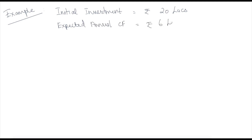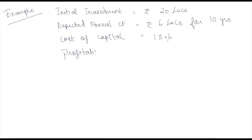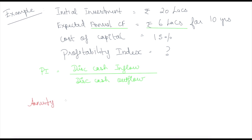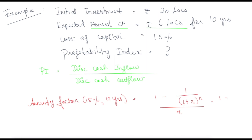Let us move on to the next example. Initial investment is rupees 20 lakhs, expected annual cash flow is rupees 6 lakhs for 10 years, and cost of capital is 15 percent. Find the profitability index. We know the formula: PI equals discounted cash inflow divided by discounted cash outflow. For discounted cash inflow, we need to use the annuity discount factor. Whenever there is a uniform cash flow for n number of years and you want to discount it, instead of working out the discount factor for each year, you can use the annuity factor.